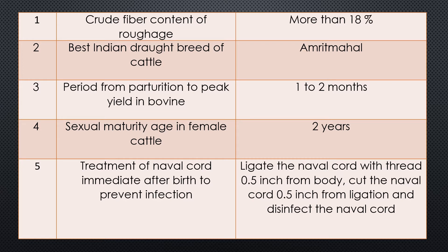Question three: Period from parturition to peak yield in bovine, both in cattle and buffalo. This is an important question. The answer is one to two months. After parturition, when the animal goes to peak production, it requires more nutrients and more management. After one to two months after parturition, it reaches highest production. If there is starvation during this peak period, the animals suffer from hypoglycemia and there are chances of ketosis.